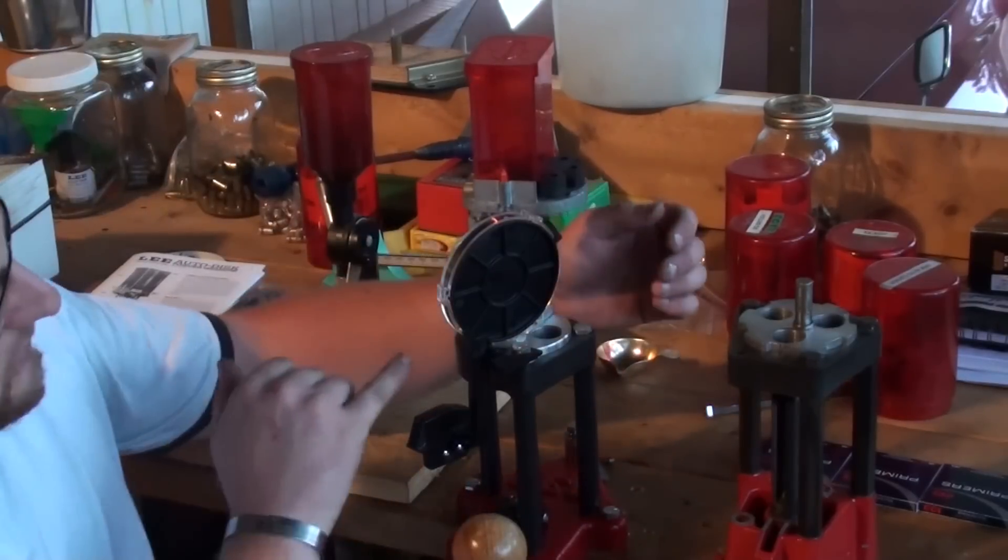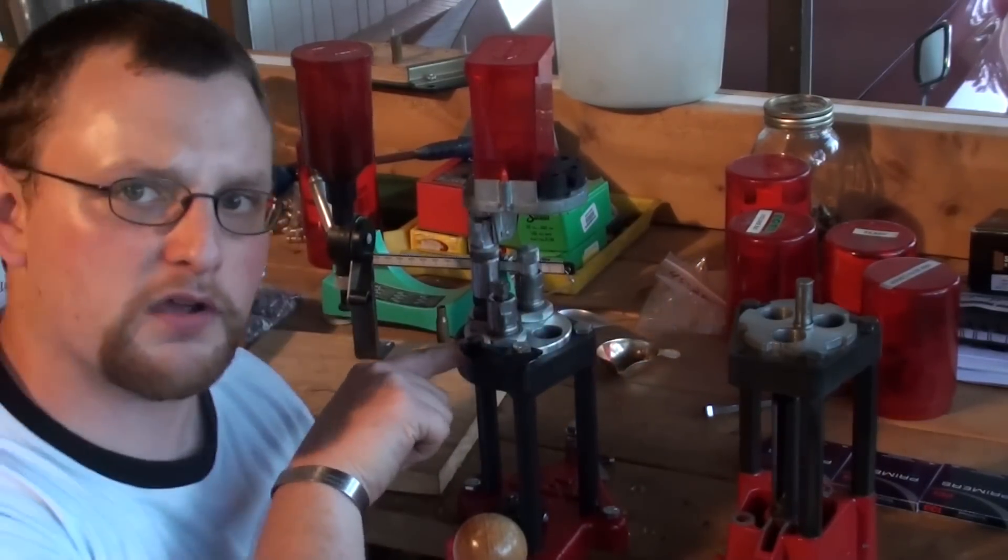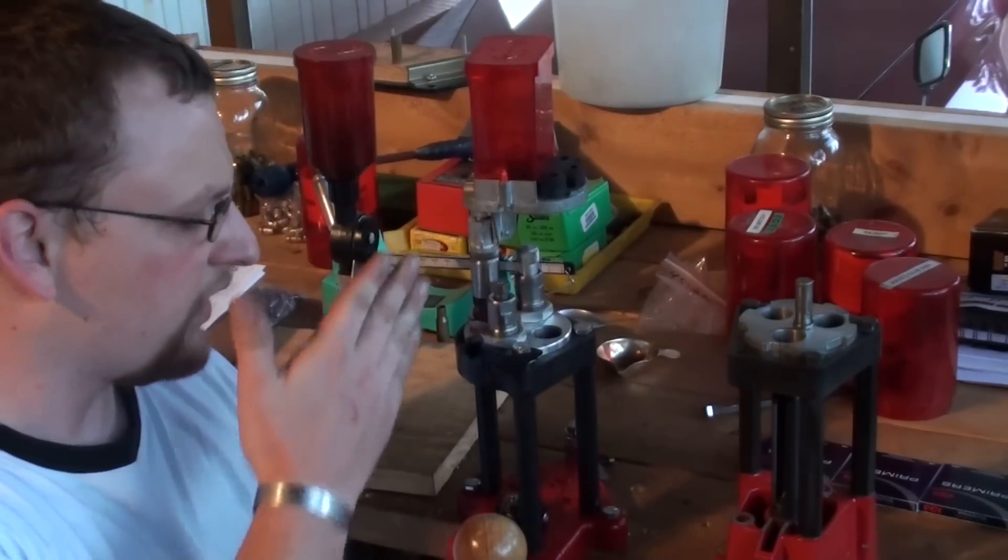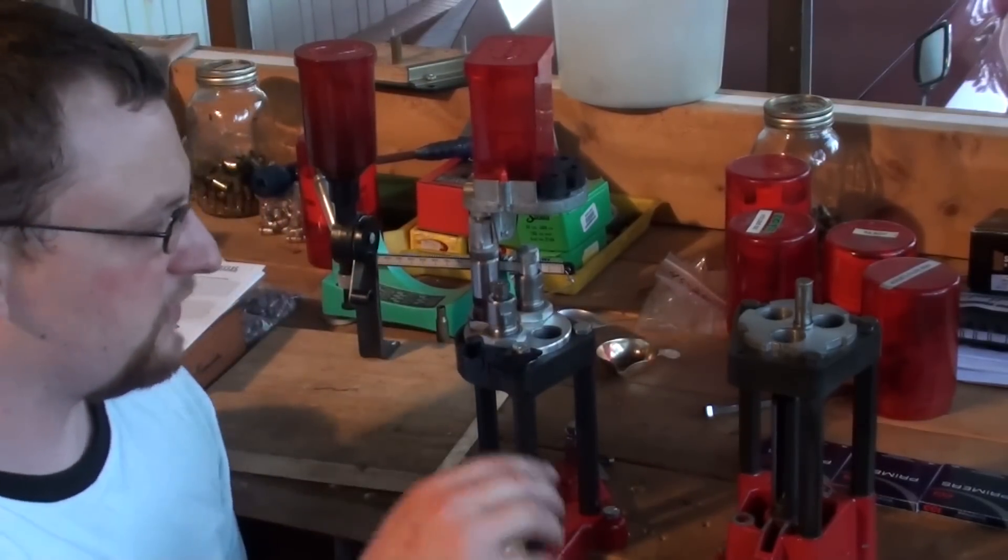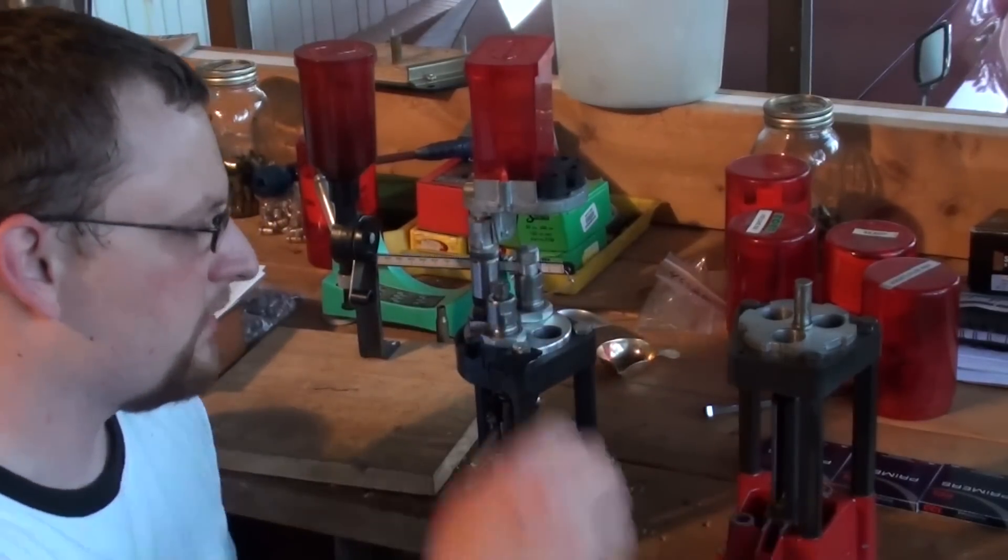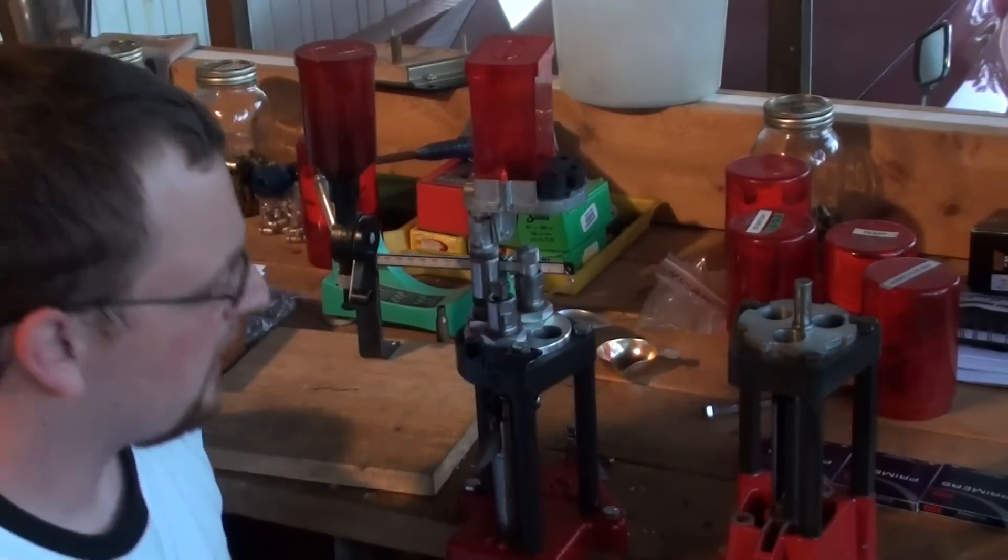You're basically going to set your die up just like you would any other die, like you would in your single-stage press. You're going to treat each station as if it's just setting up like on a regular single-stage. So with your full-length sizer and decapping die, you're going to bring the ram all the way up, screw the die in until it barely kisses, and then you're good to go.